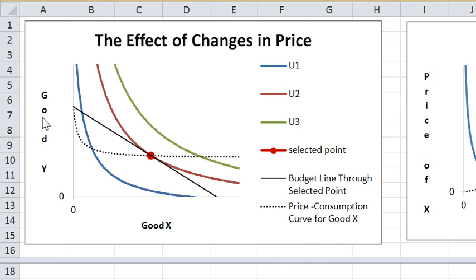Okay, we're going to do a similar exercise to what we did in the previous spreadsheet, but now we are going to vary the price of good X rather than varying income, which we did in the previous spreadsheet.